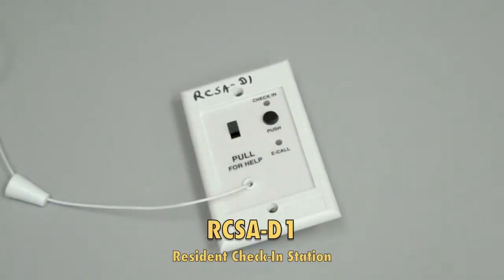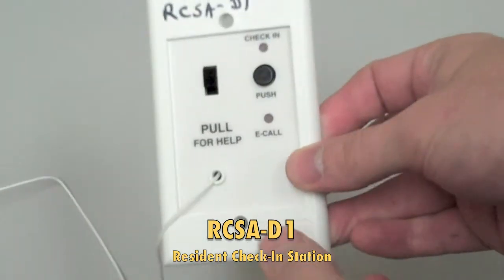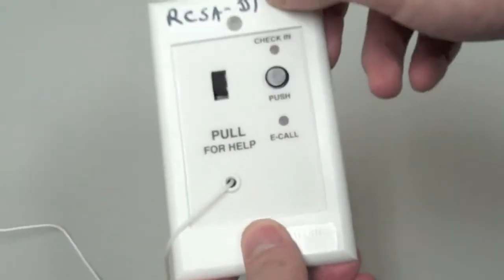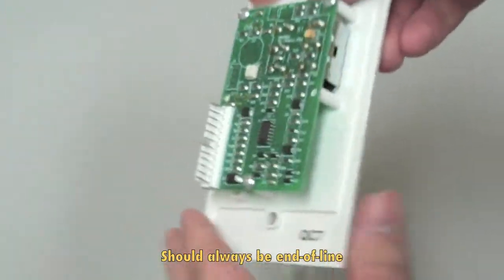This here is an RCSA, or a resident check-in station. Resident check-in station always goes at the end-of-line. There's your check-in button there. Flip it over, you'll see an identical pigtail connection just like the ECSA.